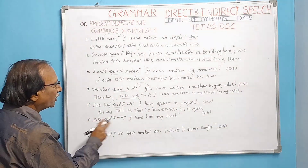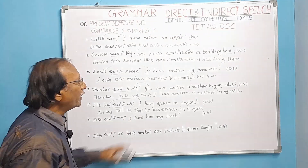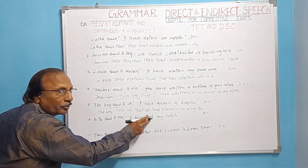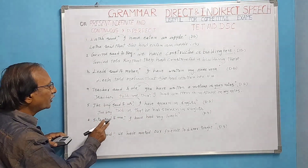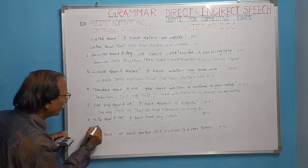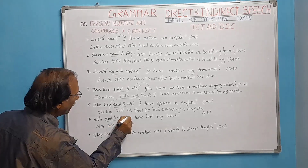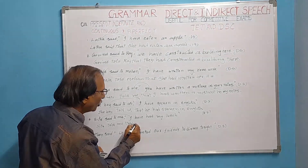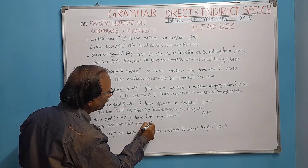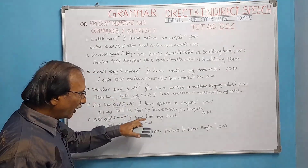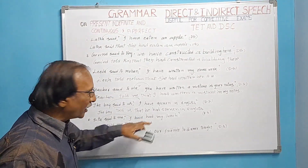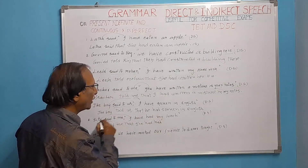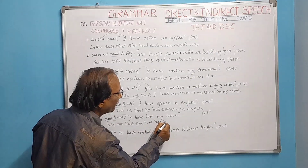Sita said to me, 'I have had my lunch.' Here 'have' is the helping verb and 'had' is used as the main verb. 'Said to' becomes 'told': Sita told me. We add 'that.' 'I' refers to Sita, so the subject becomes 'she.' 'Have' changes to 'had' as the helping verb, and 'had' remains as the main verb. 'My' refers to Sita, so it becomes 'her.' Result: Sita told me that she had had her lunch.